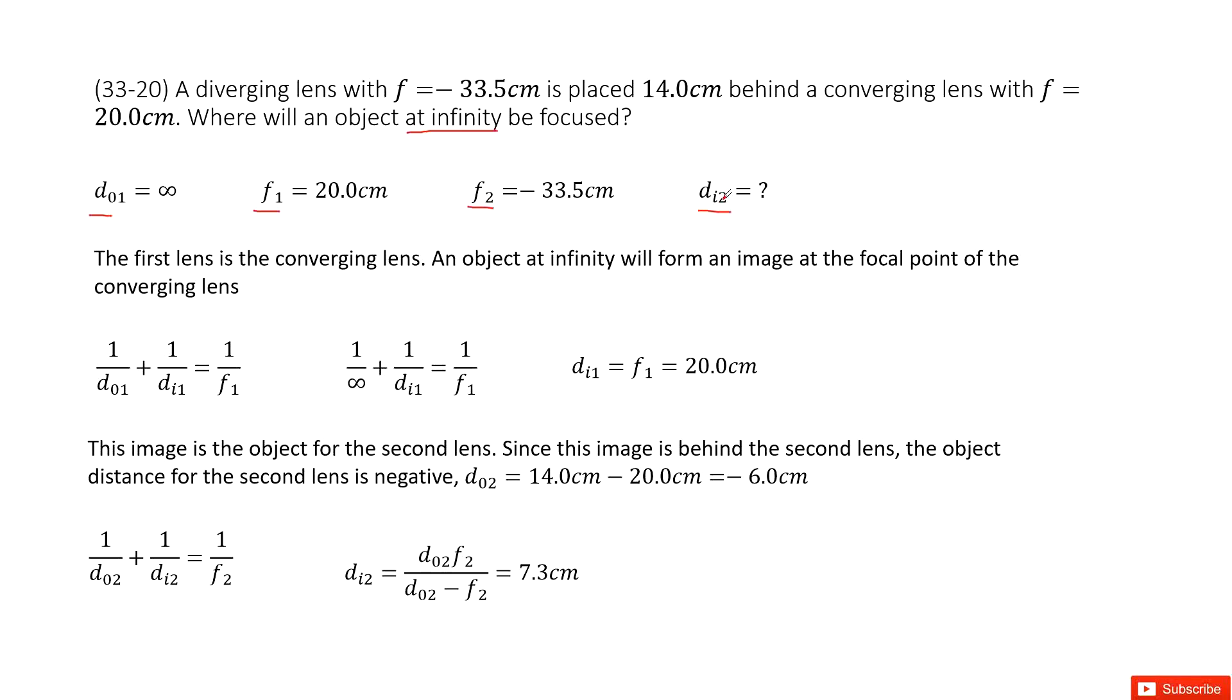Let's look at the first lens. The first lens is a converging lens and it will have a real image. This image will become the object for the second lens.